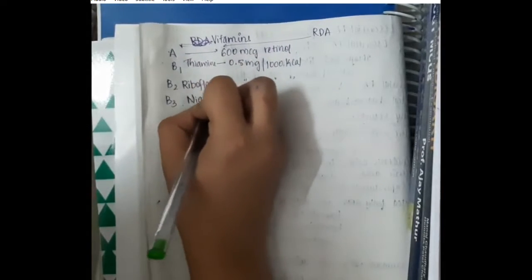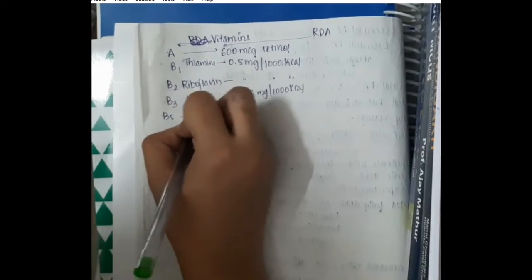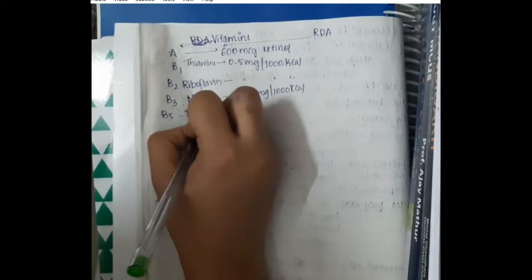Recommended dietary allowance for riboflavin is 0.5 mg per 1000 kcal. Recommended dietary allowance for niacin is 6.6 mg per 1000 kcal.